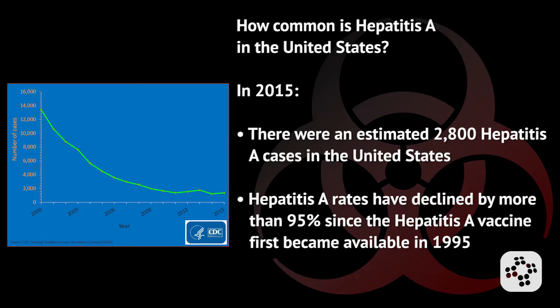How common is Hepatitis A in the United States? The latest statistics in 2015 showed that there were an estimated 2,800 cases of Hepatitis A in the U.S. alone, and Hepatitis A rates have declined by more than 95% since the Hepatitis A vaccine first became available in 1995.